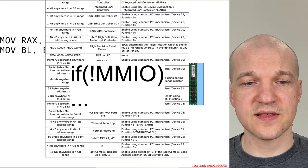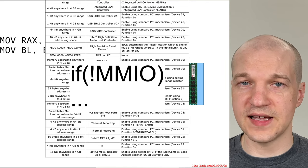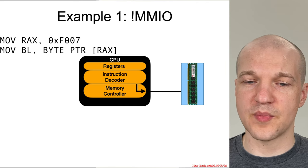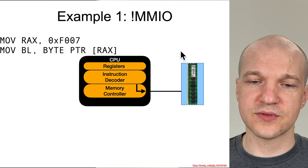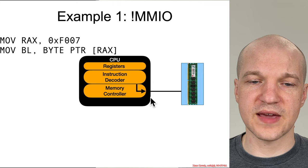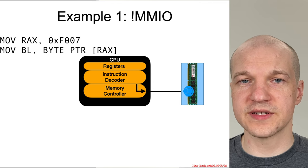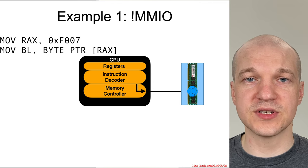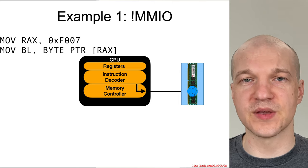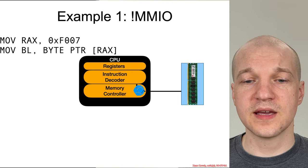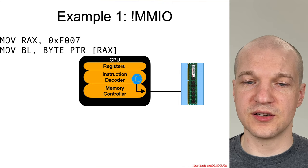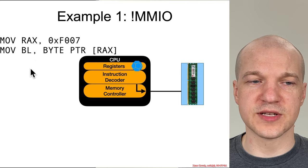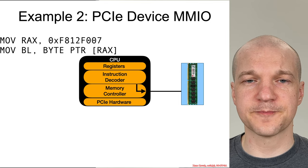Let's consider the case where it's not MMIO. In that case, our bouncing ball is going to follow this path, and the memory controller is going to send the request out to DRAM — the proper memory. Then it'll get back the memory and stick it into register BL, as you would expect.